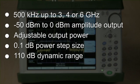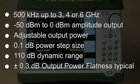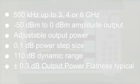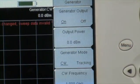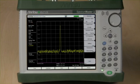A greater than 110 dB dynamic range is possible. Output power flatness is guaranteed to a level of plus or minus 1 dB, although flatness of plus or minus 0.3 dB can typically be seen. Additionally, Anritsu's tracking generator includes a CW generator, provided at no additional charge.